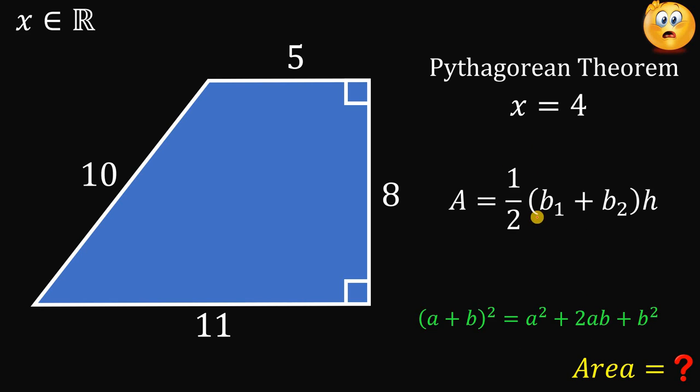So, using this formula, we have one half times base 1 plus base 2 times h.